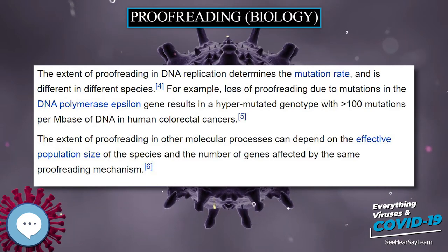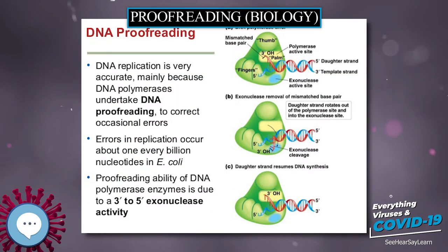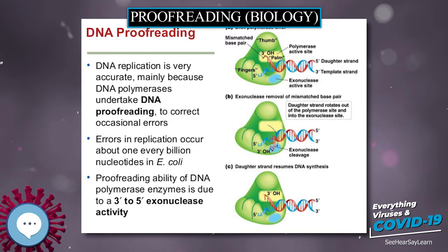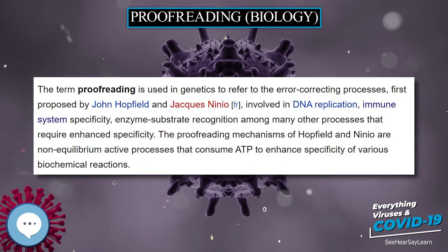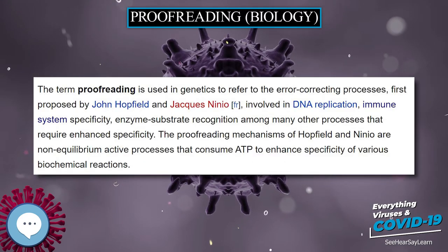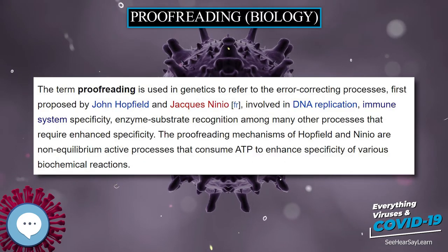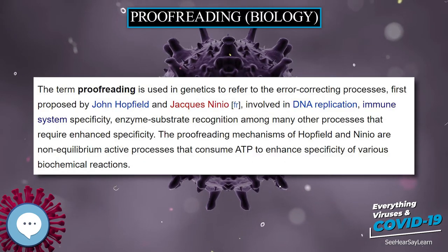The proofreading mechanisms of Hopfield and Nino are non-equilibrium active processes that consume ATP to enhance specificity of various biochemical reactions.